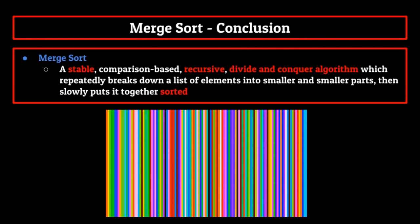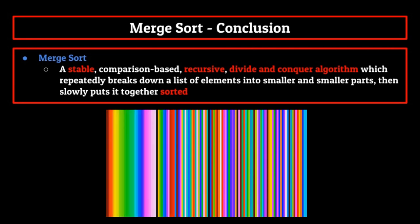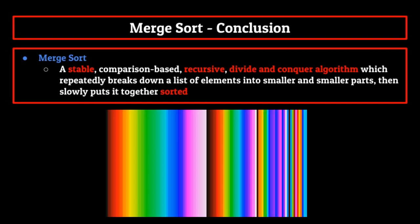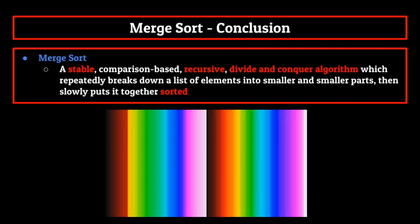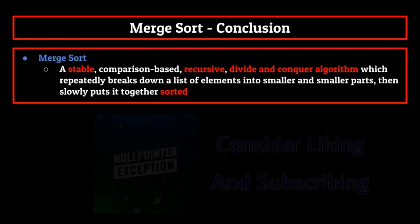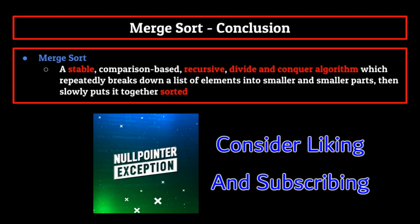And that concludes our discussion on merge sort. As a recap, it's a stable comparison-based recursive divide and conquer algorithm which repeatedly breaks down a list of elements into smaller and smaller parts, then slowly builds it back together in a sorted manner. This was a lengthy episode with a lot of information, and it took quite a while to put together. So if at any point you learned something new, or you enjoyed the video, consider dropping a like and subscribing, as we have more videos like these on the way. Feel free to comment any questions you may have below and I'll be sure to answer them. Thank you so much for watching, and I'll see you next time. Take care.